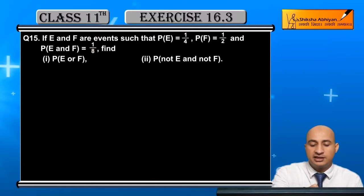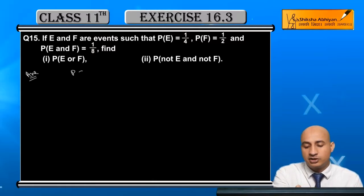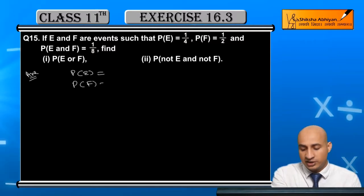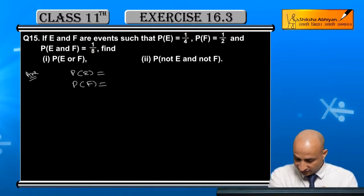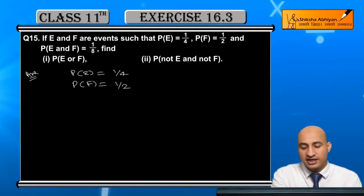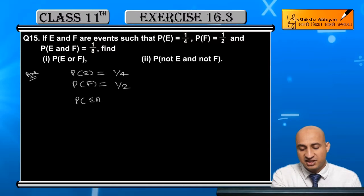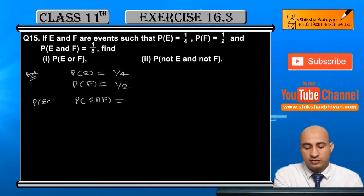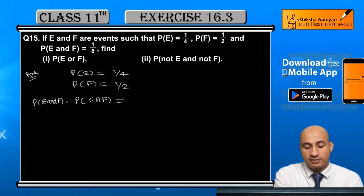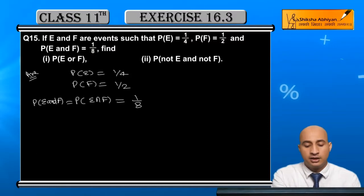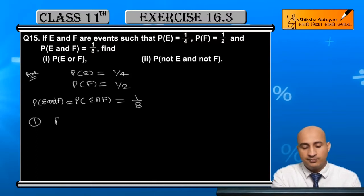First of all, let me write down what is given. We know the probability of event E, probability of event F — that is P(E) = 1/4 and P(F) = 1/2. Also, P(E intersection F) is given, which means P(E and F) = 1/8.